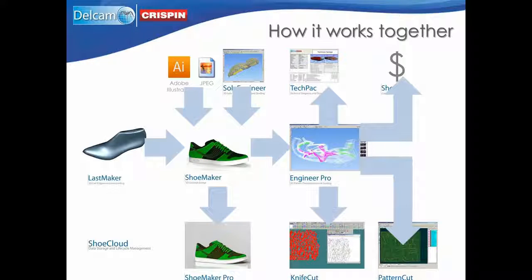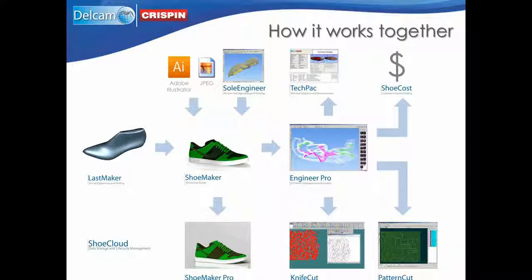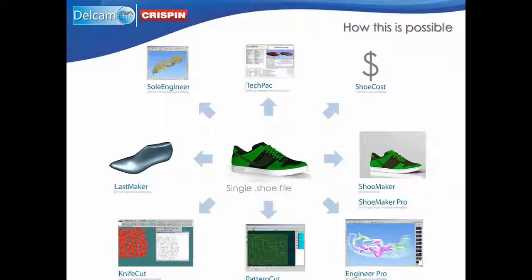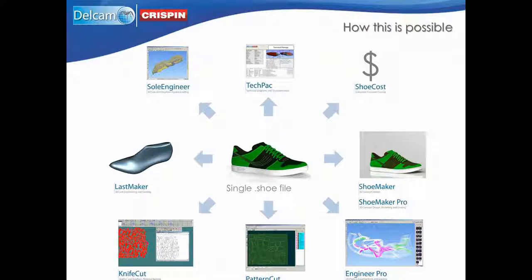Shoe Cloud enables all information about each shoe you design to be stored in the cloud, under full revision control with tracking information and email notifications, making the design process as efficient as possible. All of this can be achieved without the need to continually import and export individual files, which takes time and can result in data loss. Instead, all Delcam Crispin software uses a single .shoe file, which contains all the information you need for every element of your shoe.